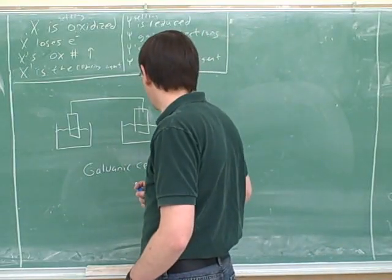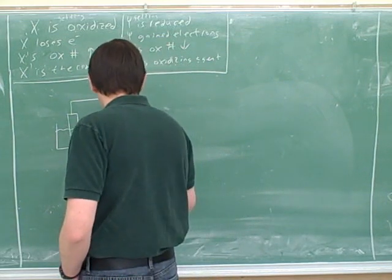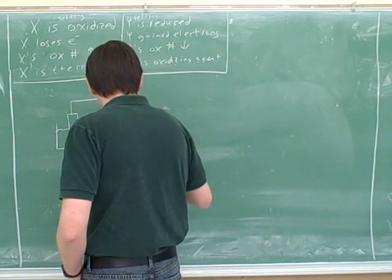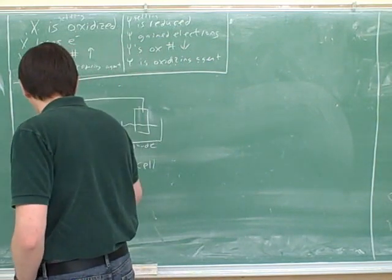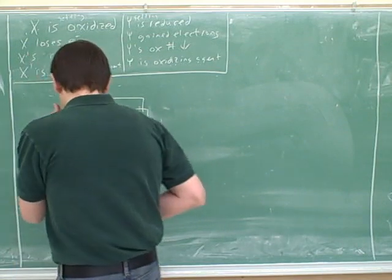All right, so let's say we have a galvanic cell here, and let's call this the cathode, and this the anode.